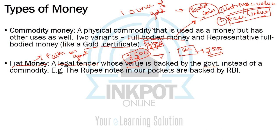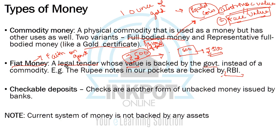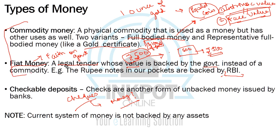In India, rupee notes are backed by the central bank, the Reserve Bank of India. There is one more form of money: checkable deposits, for example bank checks. Are they money? As long as somebody is willing to accept a check, they are money. You can write a check and withdraw money, or give it to someone else who withdraws it from your bank. From an exam perspective, commodity money and fiat money are the two most important types.